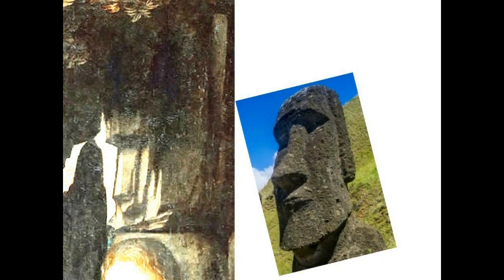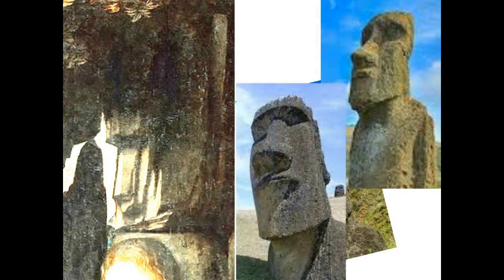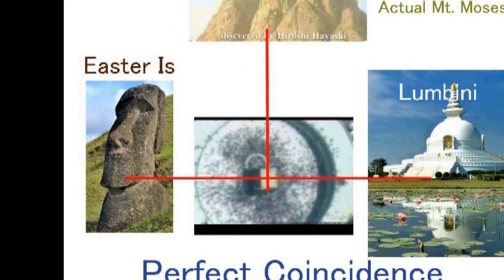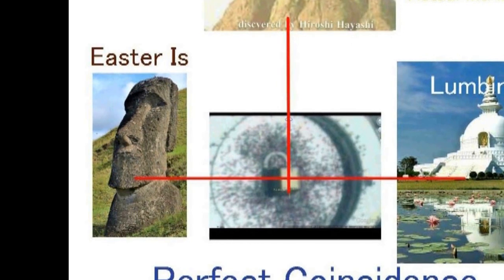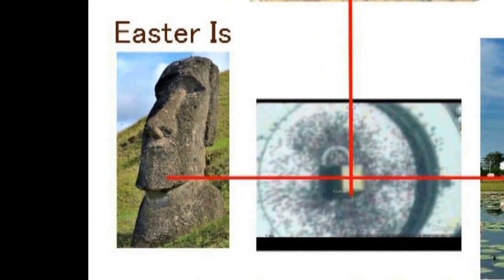そのイースター島のモアイが、ダビンチのこの絵の中に描かれていたとしても、何らおかしくないということになります。繰り返しますが、岩窟の聖母の上の方にはモーゼ山が描かれています。そしてその下に、この岩が描かれています。この岩はイースター島のモアイに似ており、手も描かれていますから、ブッダ像の一部ということになります。ここにイースター島のモアイが描かれていたとしても、何らおかしくないということになるのではないでしょうか。そう言われればそうだ。そのように考えても、何らおかしくない。